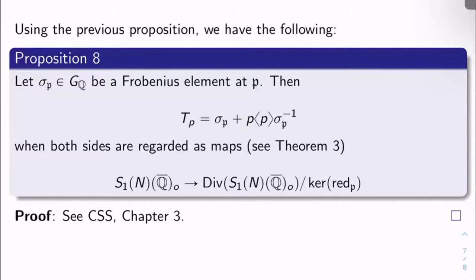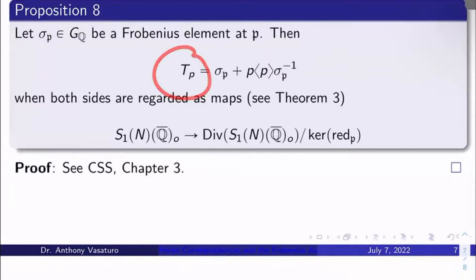So then it turns out I get an explicit formula for the p-th Hecke correspondence as follows. T_p, the Hecke correspondence, equals σ_℘ + p·⟨p⟩·σ_℘⁻¹.